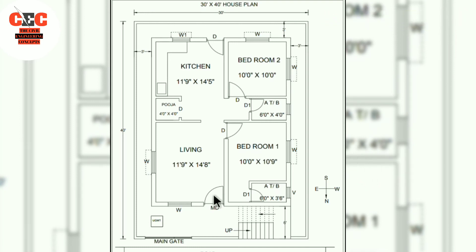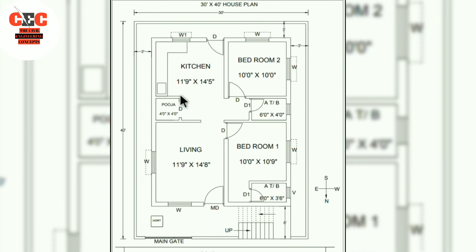The main door can be 3.5 to 4 feet wide. Near the entry to the kitchen and both bedrooms, an arch is provided. Back door and puja room doors are 3 feet wide. For both bathrooms, 2.5 feet — that is 2 feet 6 inch wide — doors are provided.